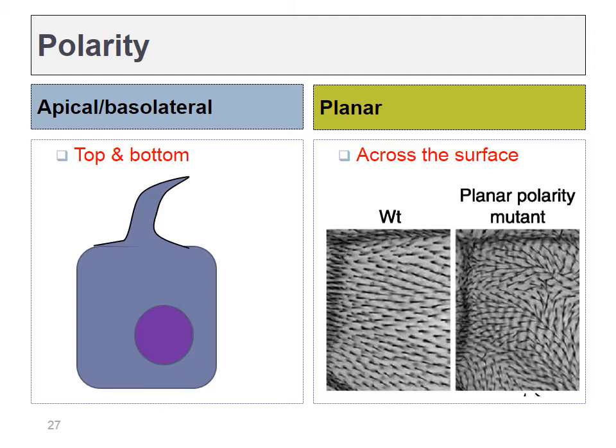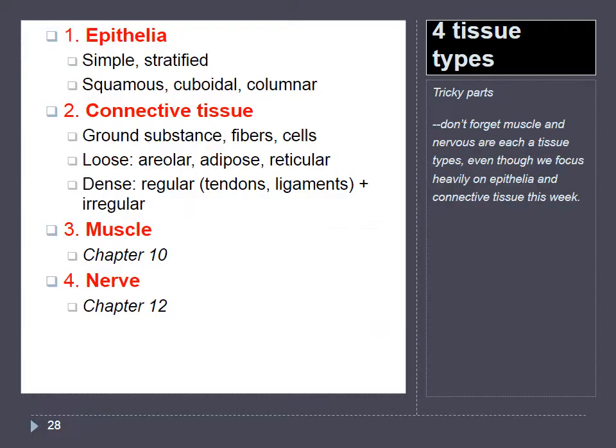We talked about apical and basolateral polarity — the top and bottom. Epithelial cells also have planar polarity, meaning we're talking about what direction a hair-like structure is pointing. As shown in this picture, they're all pointing in the same direction. All of these cells are communicating with one another so that they know what direction they are facing.